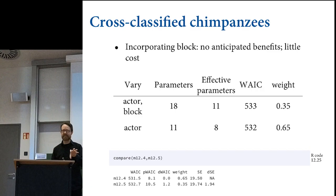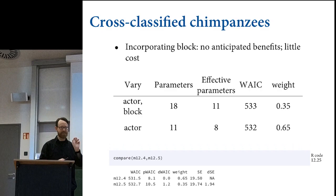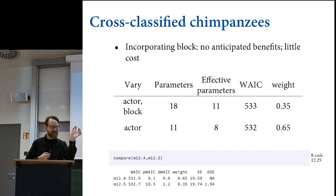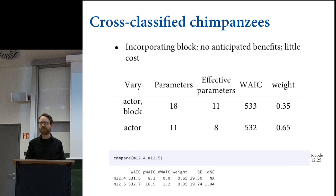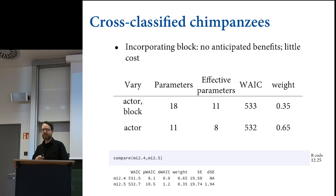The varying intercept estimates—those sigmas—tell you where the action is in the data, at what kind of cluster. That's incredibly useful. And then as you add predictors, those sigma parameters get smaller because the predictors soak up variation. There's a homework problem about this: you'll take the tadpole data and start adding predictors—predators like damselfly larvae—and as tadpoles get gobbled up, you'll see the sigmas get gobbled up too, because the variation left for the varying intercepts to explain goes down as you put in predictors that matter.